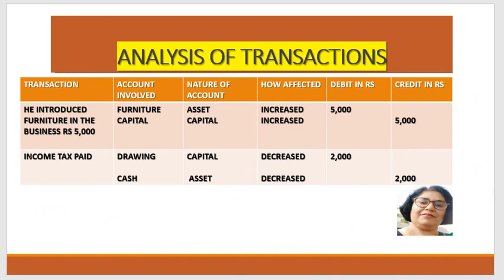In the same way, Ram introduced furniture in the business worth ₹5,000. Here the businessman has introduced capital in the form of furniture (kind) rather than cash. There are two things: furniture which is an asset, and capital which is a liability. Furniture increases so we debit it, and capital increases so we credit it. For income tax paid ₹2,000 — income tax is a personal expense of the businessman, not a business expense. So it is treated as drawing. Drawing is debited ₹2,000 and cash — which is an asset — is credited ₹2,000.